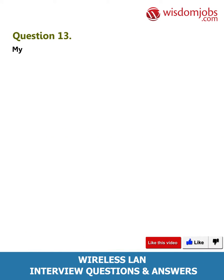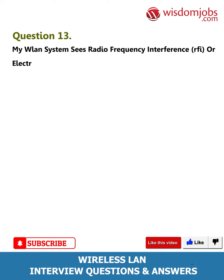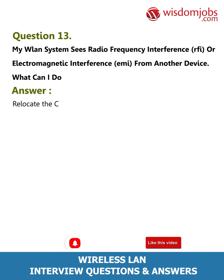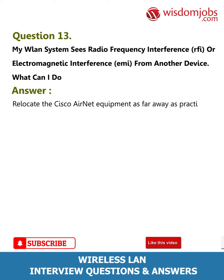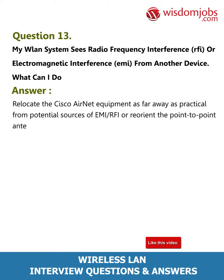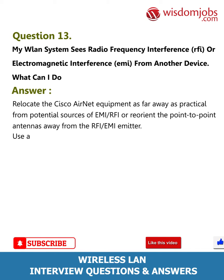Question 13: My WLAN system sees radio frequency interference (RFI) or electromagnetic interference (EMI) from another device. What can I do? Answer: Relocate the Cisco Aironet equipment as far away as practical from potential sources of EMI/RFI, or reorient the point-to-point antennas away from the RFI/EMI emitter. Use a different frequency range for the phone and WLAN.